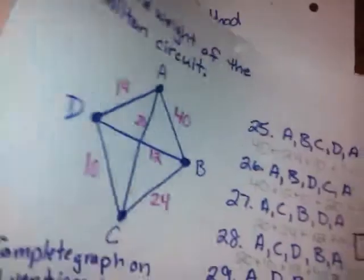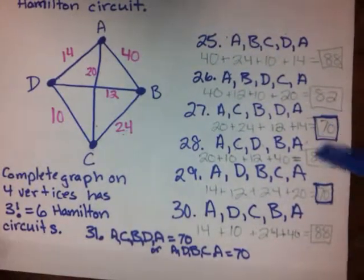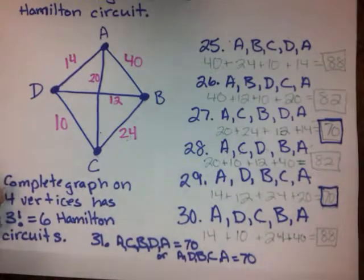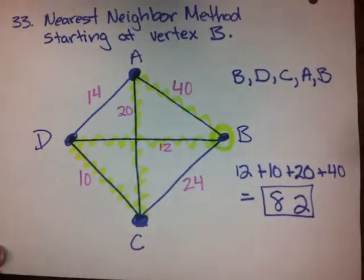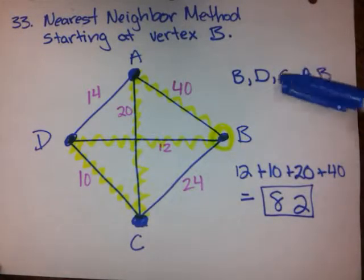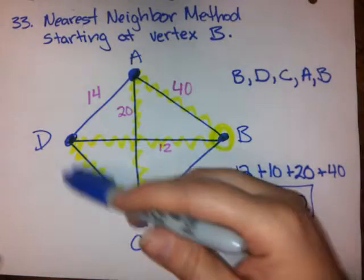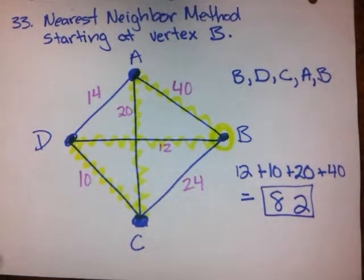Now we know that that wasn't the optimal solution. The optimal solution was 70, but 82 is not a bad guess. If you don't have to do the brute force method, and sometimes it's impossible to do the brute force method, using the nearest neighbor does get us a good guess at what an inexpensive path through that graph is.